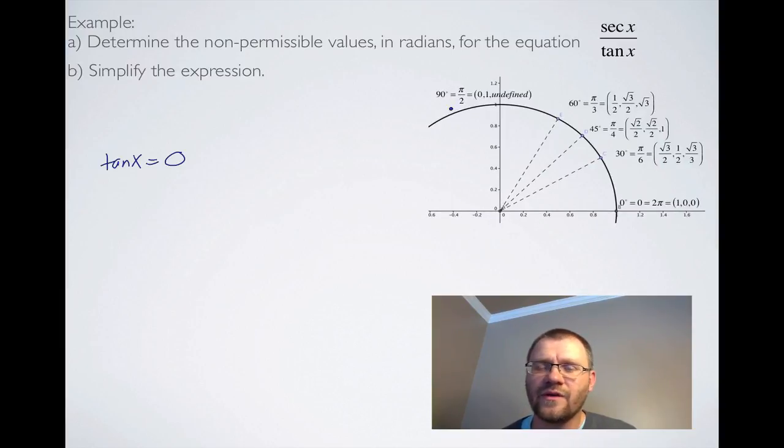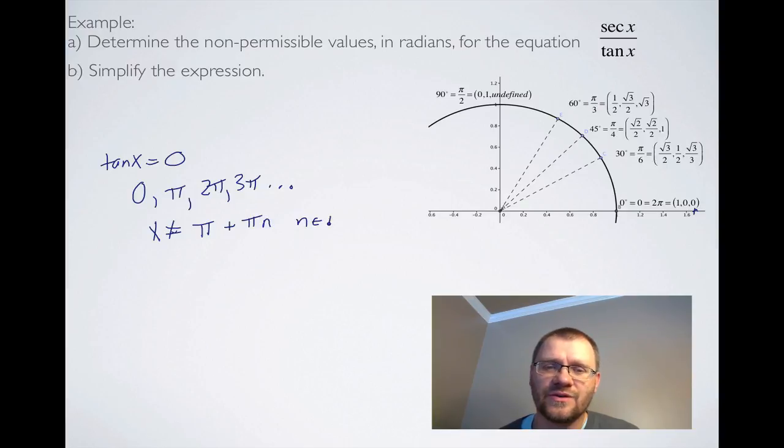We pull up our unit circle. I just use the first quadrant here. We look for tan, which on our unit circle we had called the third coordinate. That means that tan x is equal to zero at zero, and it says in radians. Also, if we move all the way around the unit circle, it would be over here at pi, it would be at 2 pi, it would be at 3 pi, etcetera. We're now familiar with something called the general solution. We know that x cannot equal any multiple of pi, either in the positive direction or the negative direction. We could say pi n, where n is any integer. That would mean pi minus pi or pi plus pi. Our value cannot exist there. This is our non-permissible values.